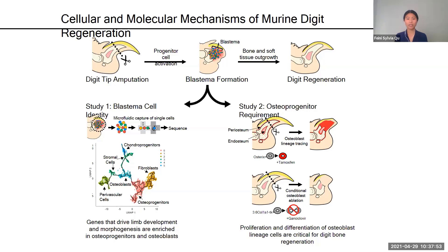Next, I wanted to see if activated osteoprogenitors are necessary for digit regeneration, so I conditionally ablated proliferating osteoblasts. As expected, the bone failed to regenerate in the absence of these cells. However, there was still some soft tissue outgrowth, suggesting that partial recovery was possible without scar formation.